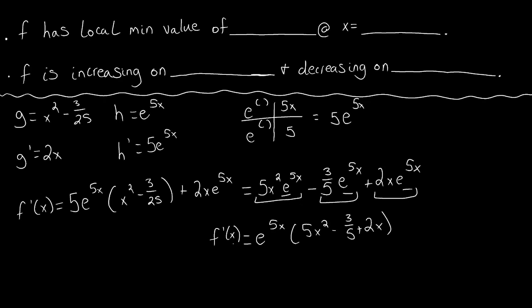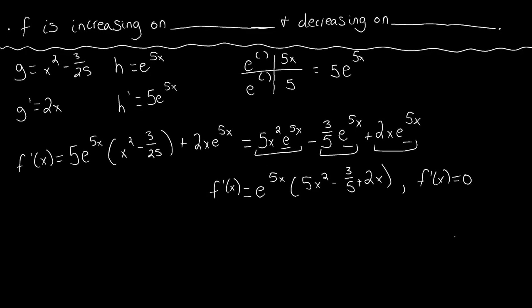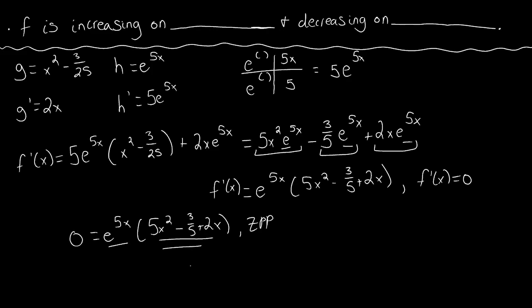Since this derivative function is defined for all x, all we need to find is where f prime of x equals 0. We set the derivative equal to 0 and use the zero product property to figure out what makes each individual factor equal to 0. So we get 0 equals e to the 5x times (5x squared minus 3 fifths plus 2x), and we can set each factor equal to 0 and solve for x individually.